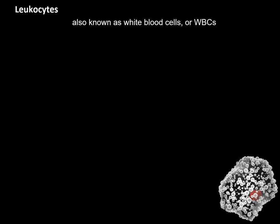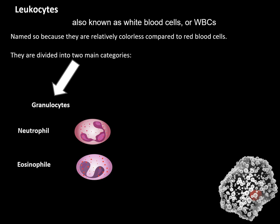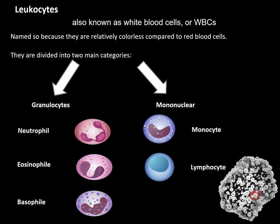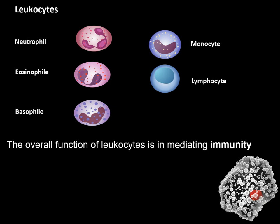Leukocytes, also known as white blood cells or WBCs, are so named because they are relatively colorless compared to red blood cells. They are divided into two main categories. Granulocytes, such as neutrophils, eosinophils, and basophils, have cytoplasm filled with granules with different staining characteristics and lobulated nuclei. Mononuclear cells, which include monocytes and lymphocytes, have nuclei that are not segmented and are round, oval, indented, or folded. The overall function of leukocytes is in mediating immunity, either innate, as in phagocytosis by neutrophils, or adaptive, as in the production of antibodies by lymphocytes and plasma cells.